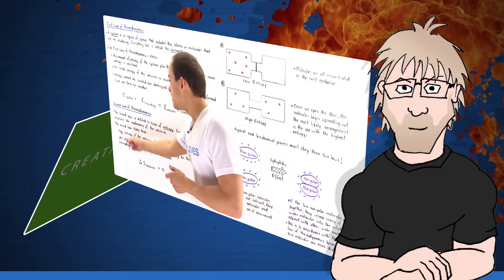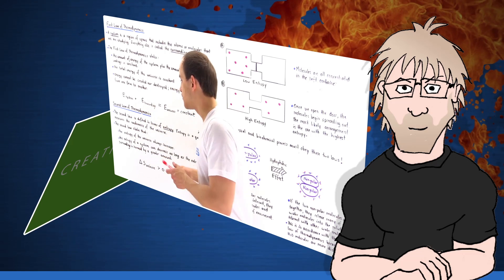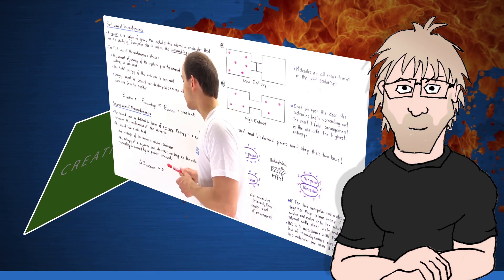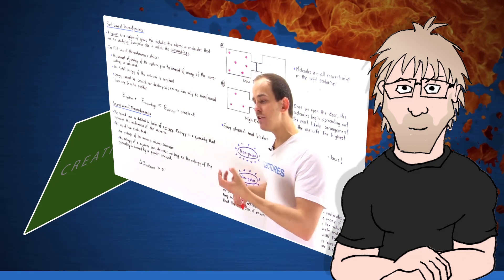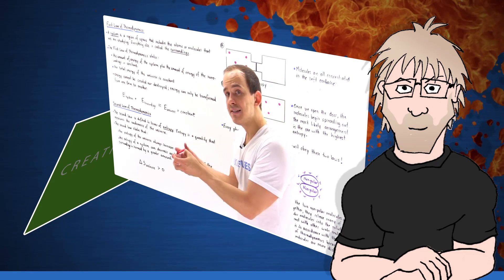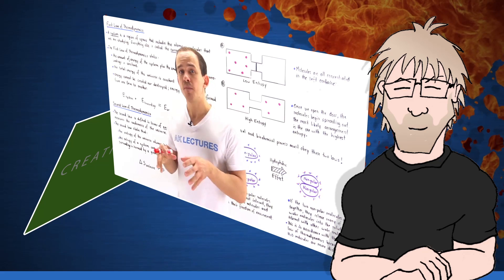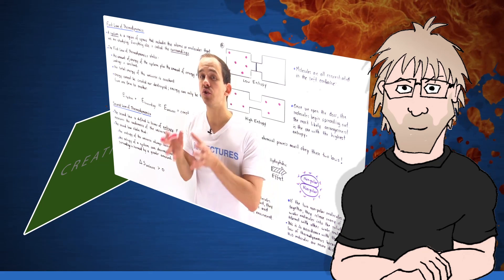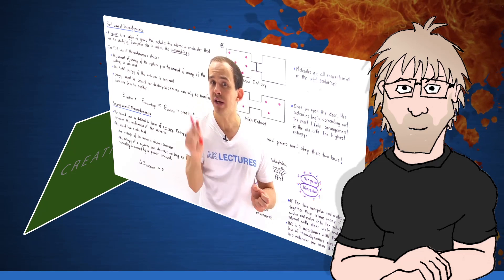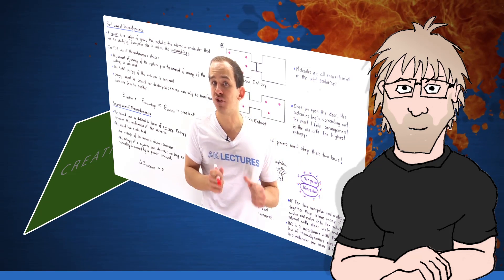The second law of thermodynamics states that the entropy of the universe always increases. Now, that doesn't mean that the change in entropy of a system cannot be negative. The entropy of a system can still decrease as long as the entropy of the surroundings increases by a greater amount. And a more general way to state the second law is that in real life, entropy can only increase overall.